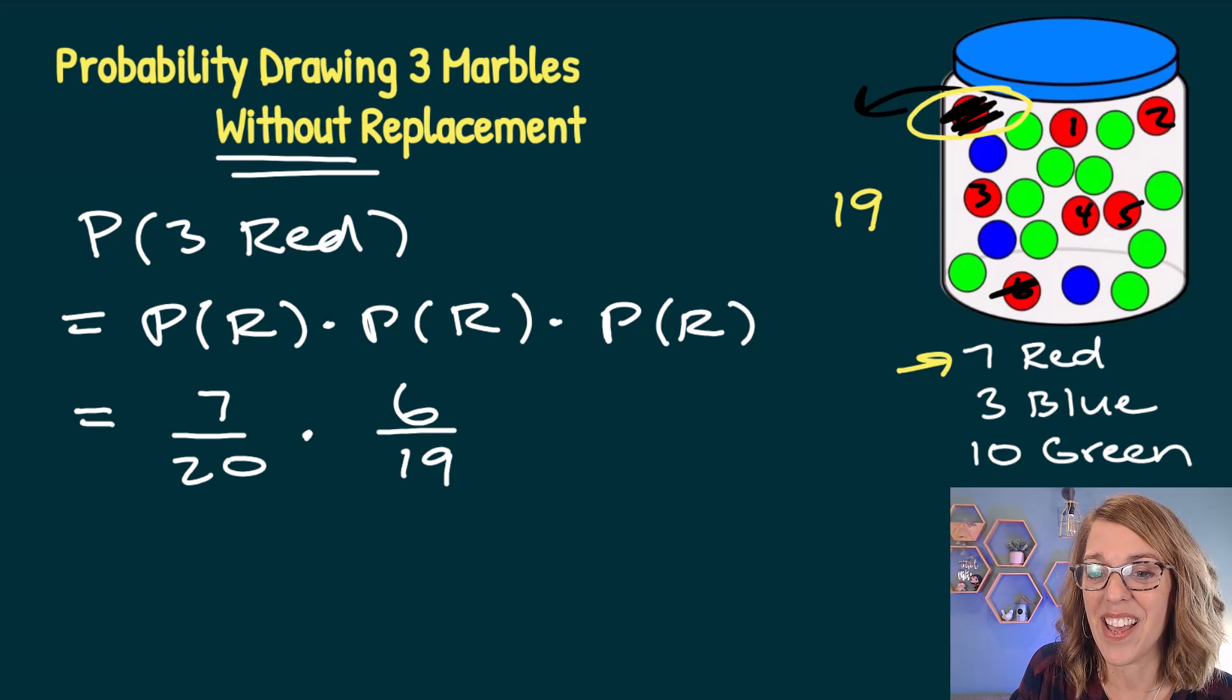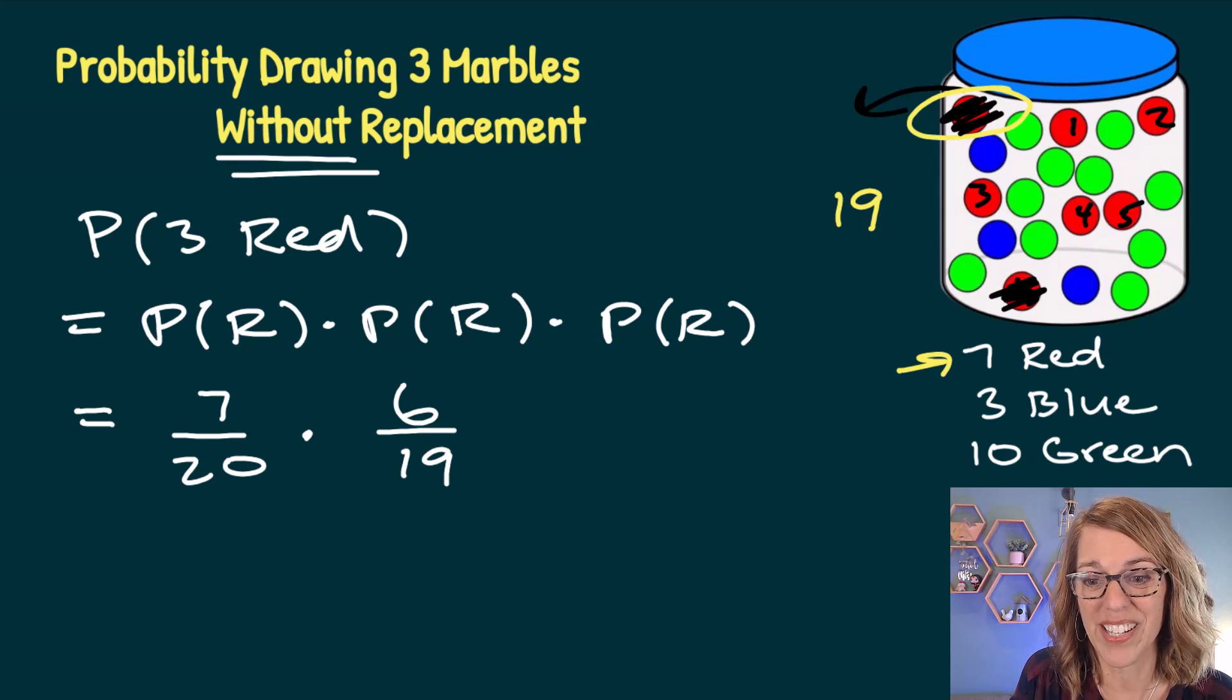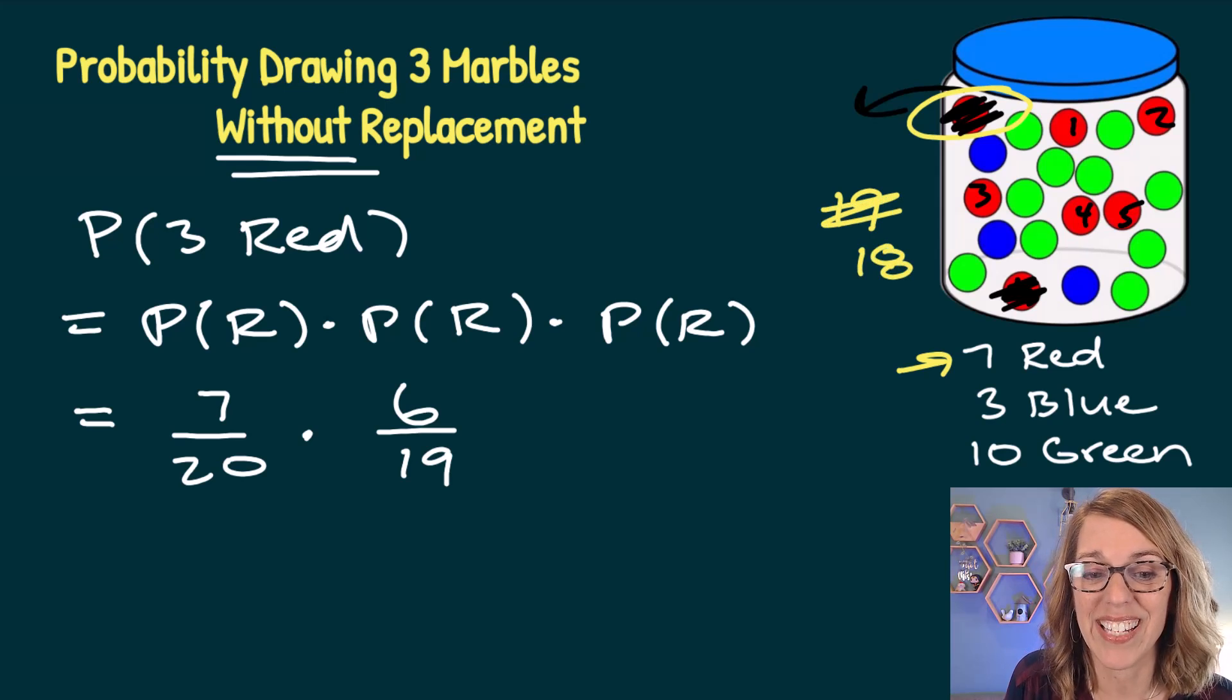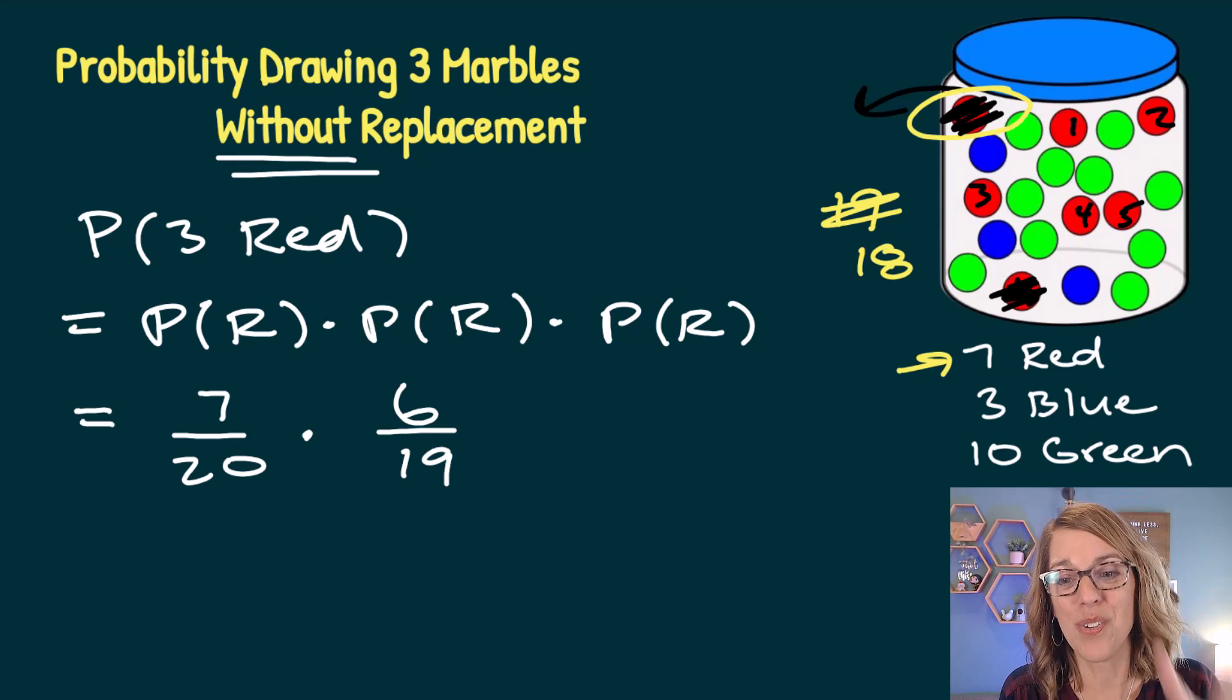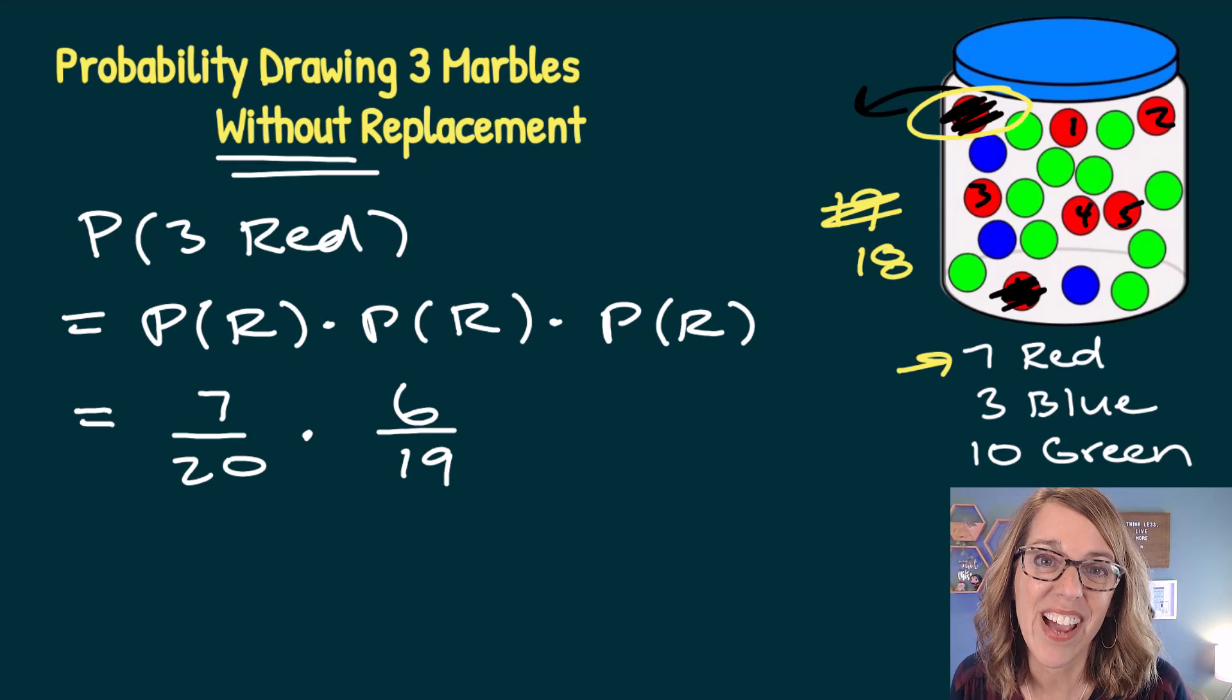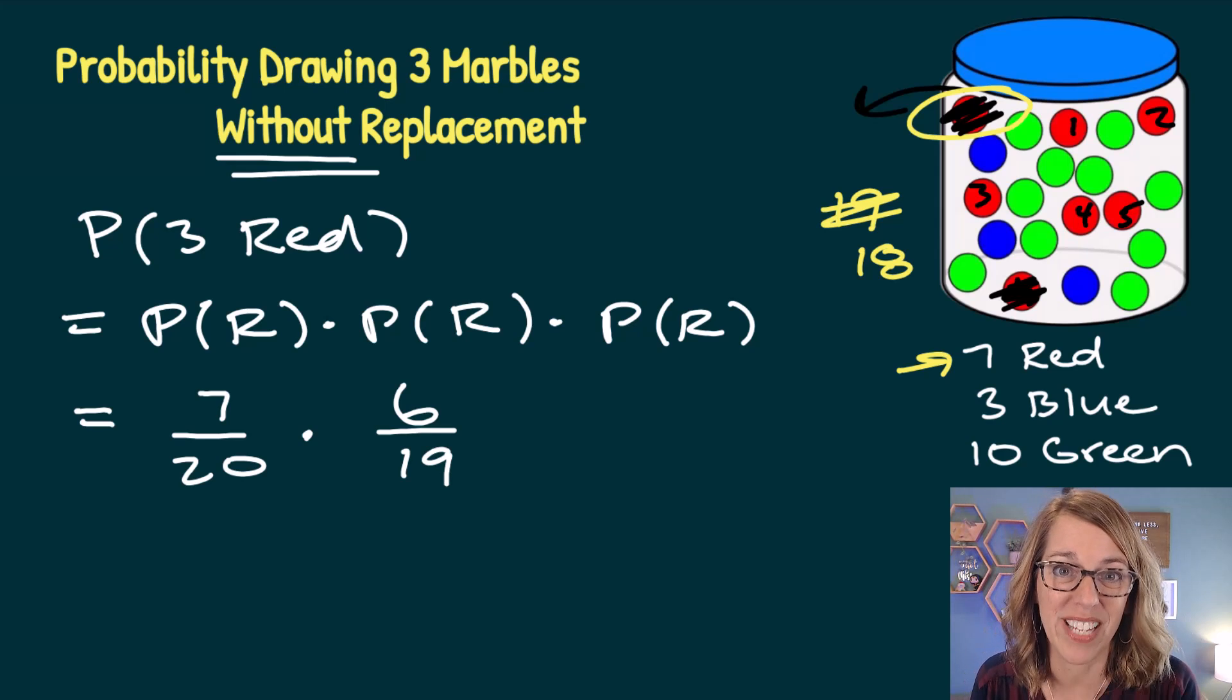Let's go ahead and take another red marble out. That means that I've got now five red marbles left. And I've also reduced the total number of marbles to be 18, because now I've drawn two of those out. And notice how as we're doing the probability, I assume that they're red marbles each time.